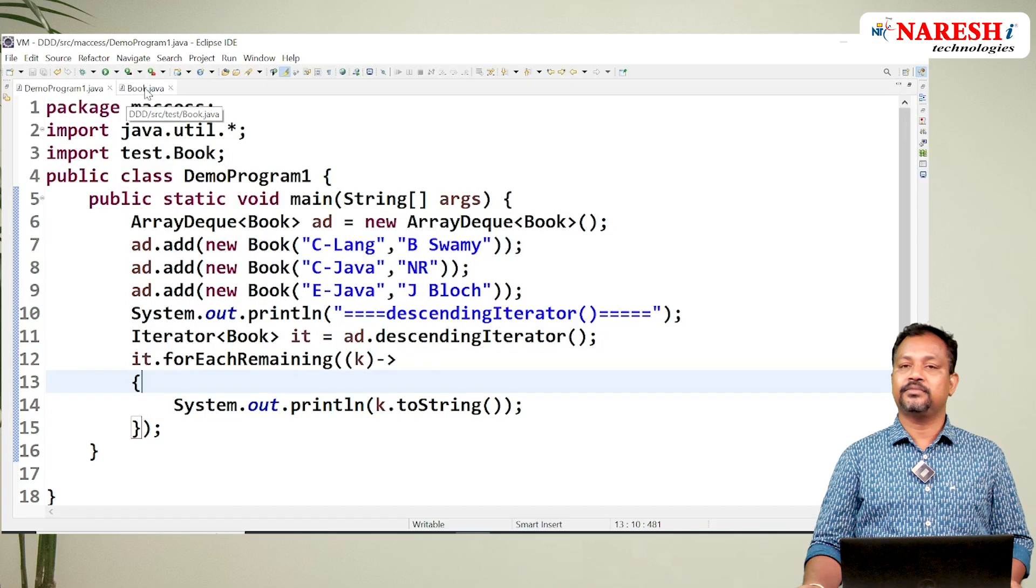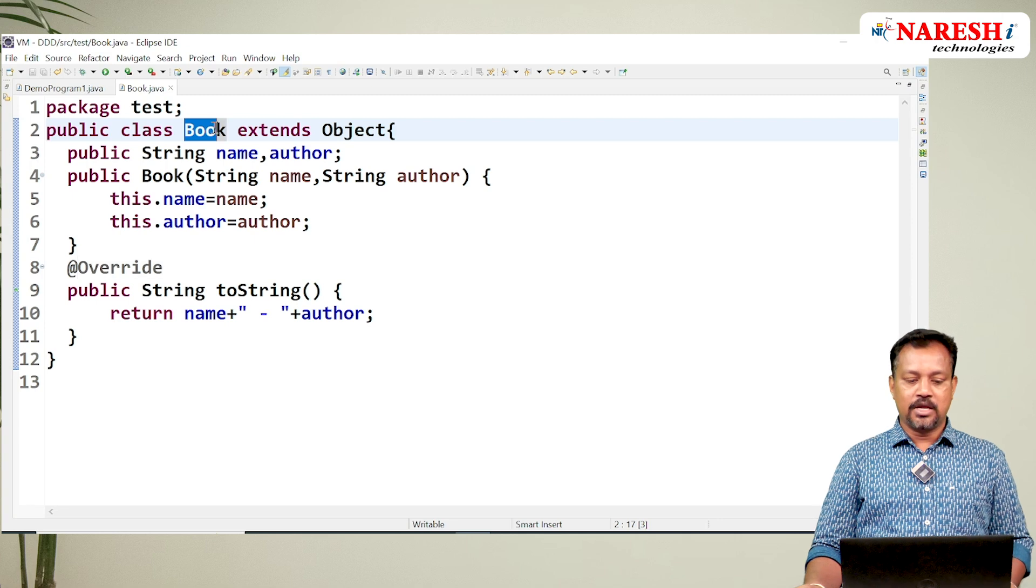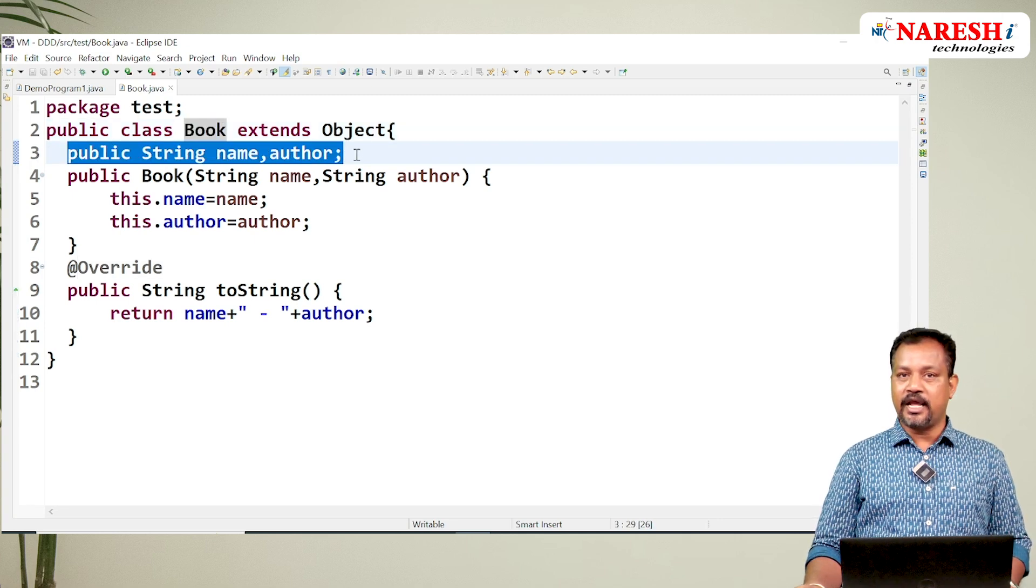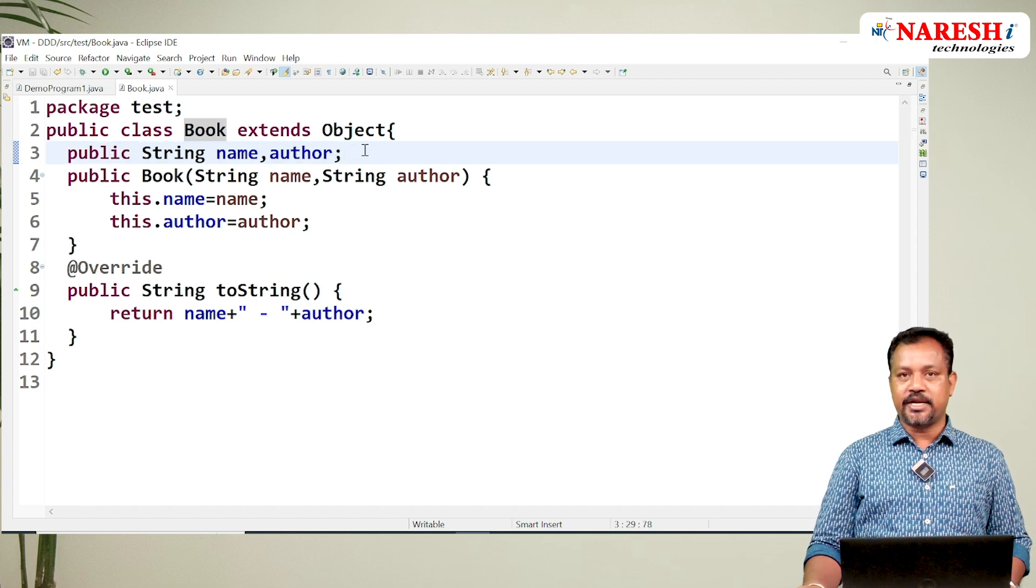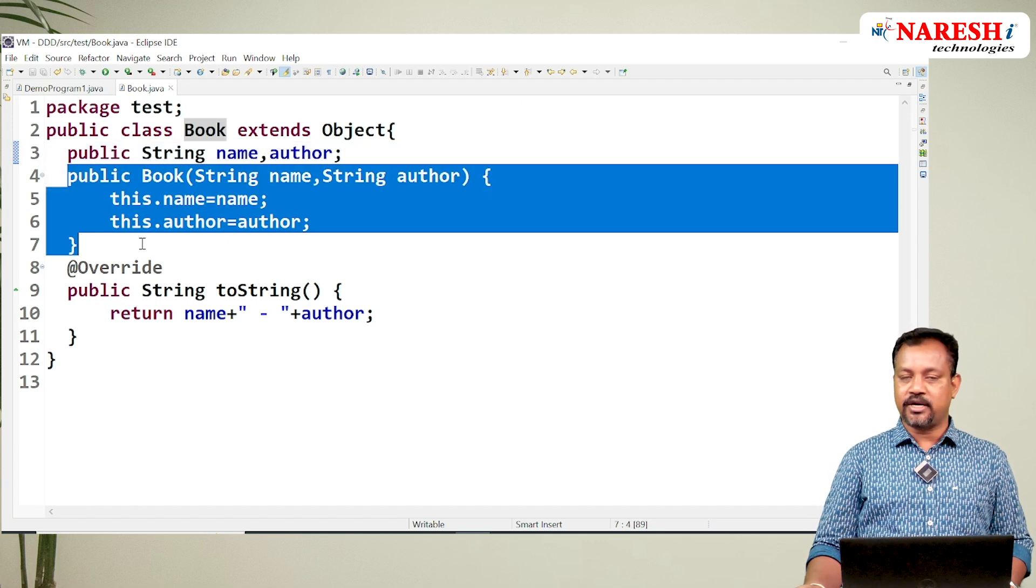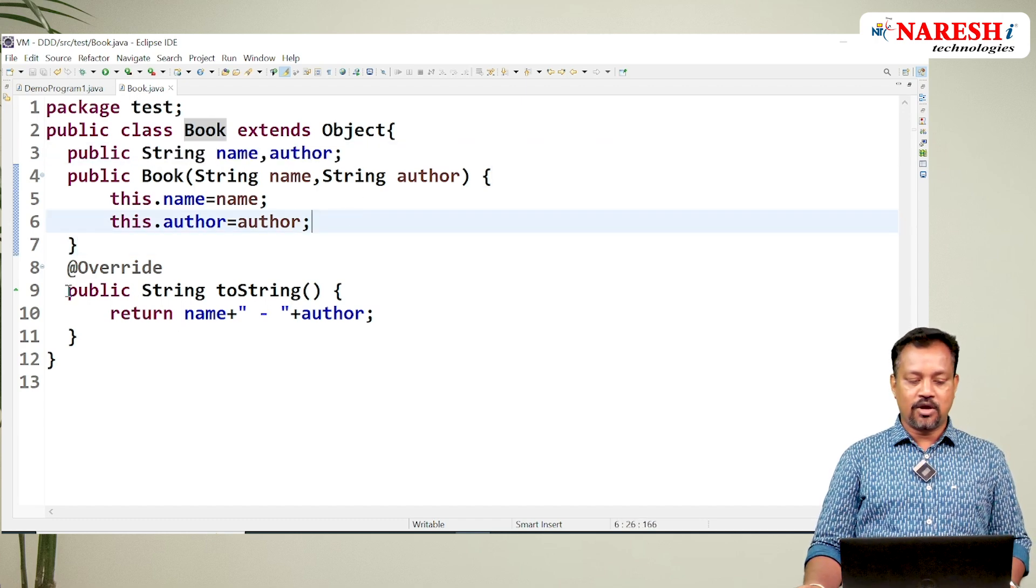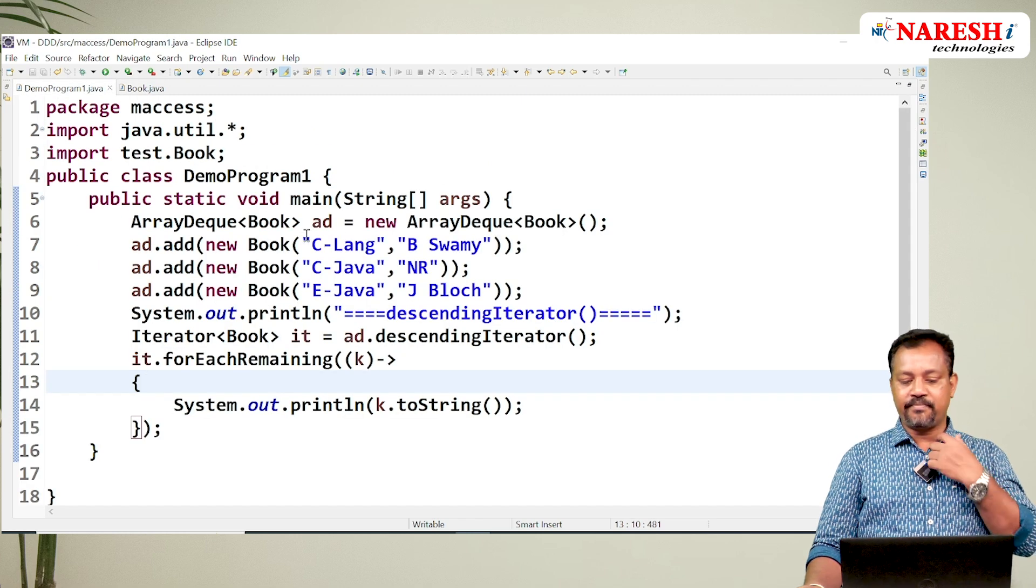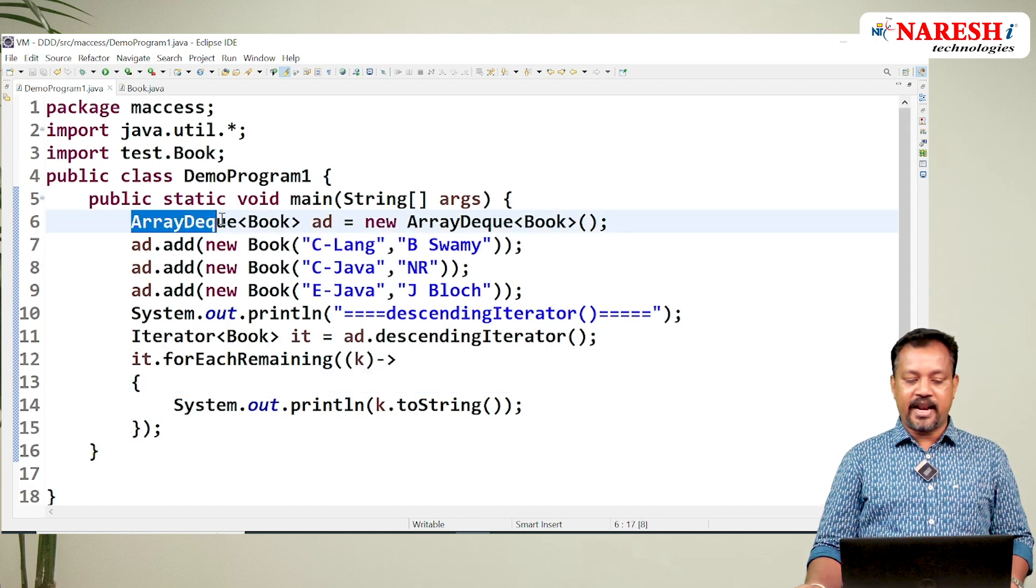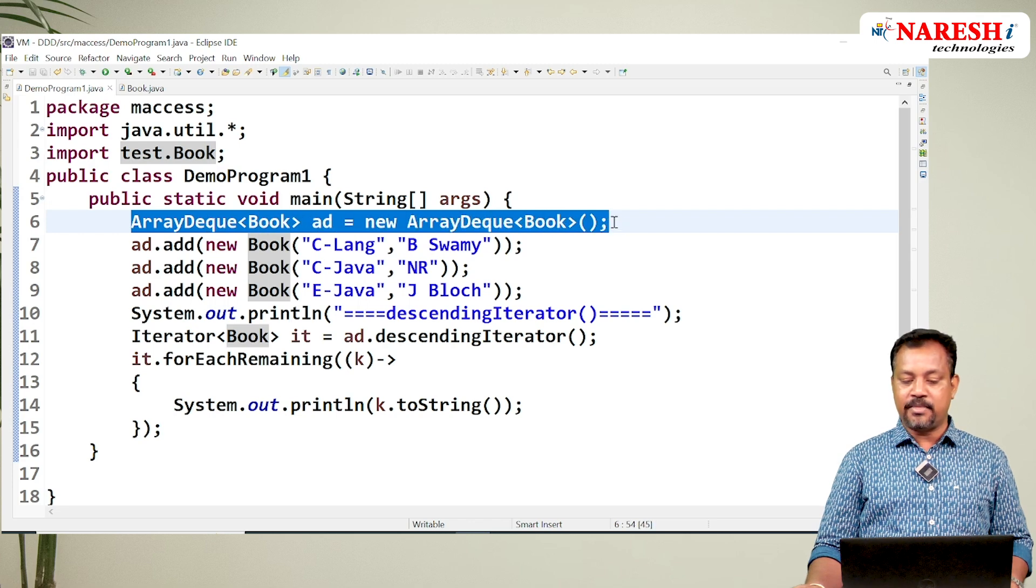In this example now, this small program, I am taking one user-defined class known as Book, which is having two instance variables: name and author. I am going to initialize the data for these instance variables using constructor. Whatever the data available in the instance variables, I am trying to display using one method, toString. Now in the main program here, test program, I am creating one ArrayDeque which is going to hold Book objects. This ArrayDeque is going to hold unlimited Book objects.